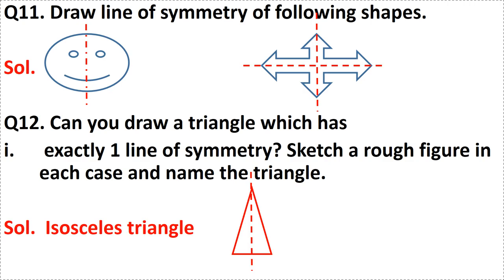Question number twelve: can you draw a triangle which has exactly one line of symmetry? Draw a rough figure and name the triangle. The answer is an isosceles triangle — draw one isosceles triangle and mark its line of symmetry. This question has four parts, each carrying one mark. Half a mark for writing the name and half a mark for drawing the figure.